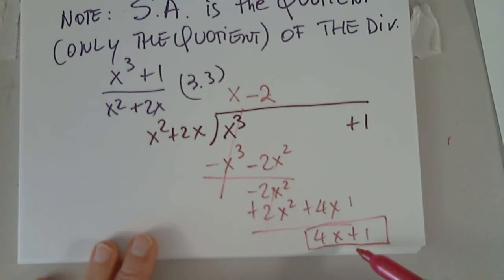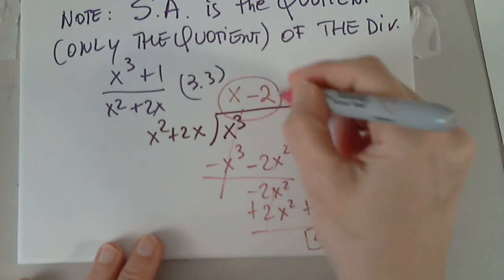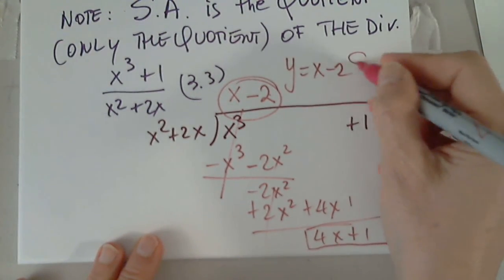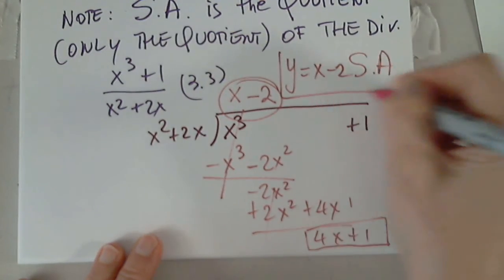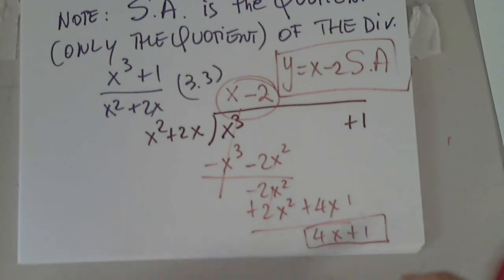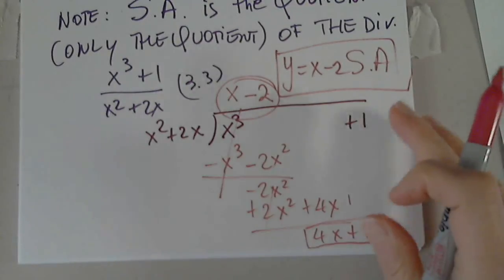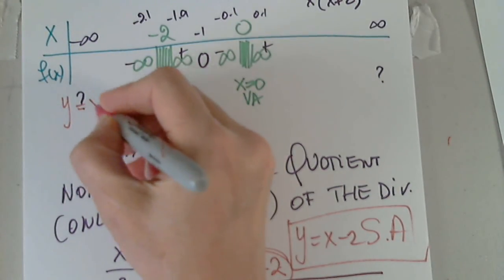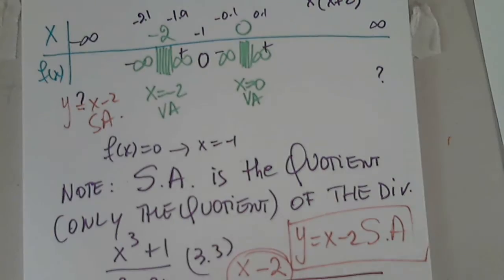Because I cannot say x squared times what is 4x. It's not possible. So this is the quotient. y equals x minus 2 is the slant asymptote. Just the quotient of the division.